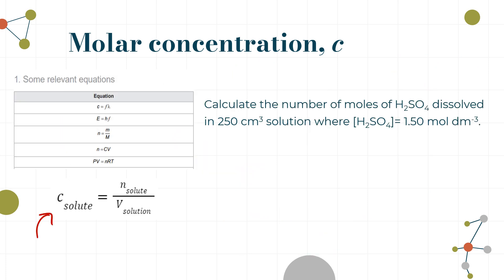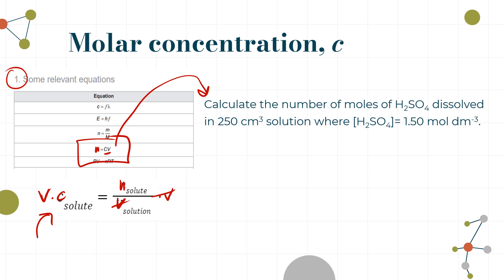This formula is kind of given in section one of the data booklet. With some algebra — multiplying both sides by V — the number of moles equals concentration times volume: n = cV. We're going to use that version to calculate the number of moles of sulfuric acid dissolved in a 250 cm³ solution where the concentration is 1.50 mol dm⁻³.